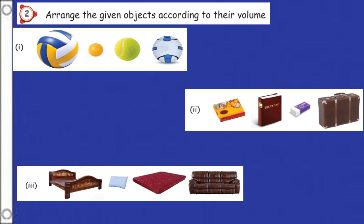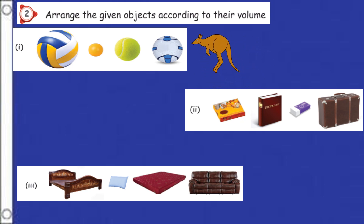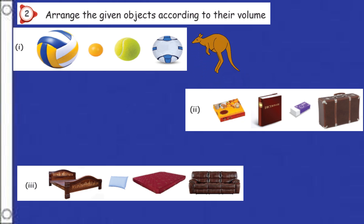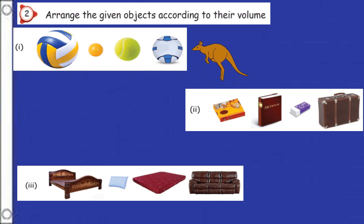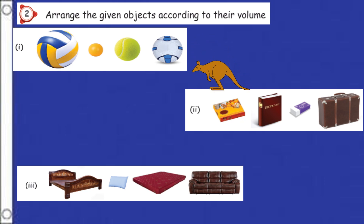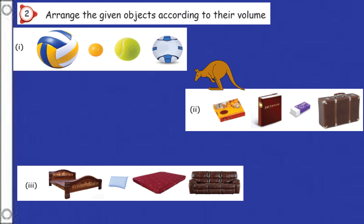Second one: arrange the given objects according to their volume. Some images are given and we have to arrange according to their volume. They didn't mention ascending or descending, but as usual we have to start from the smaller object to the bigger object. First one — four balls are given, so from that we are going to fix the order. This is also easy for you, just see once.